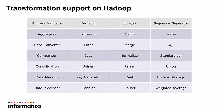Regarding update strategy: Hortonworks Data Platform does support updates, and Informatica supports the update strategy transformation on Hortonworks. However, when designing mappings that use update strategy or sequence generator, you need to understand how the Hadoop platform processes the data. Specifically for update strategy, there are additional configurations required on your Hive table to leverage it. Work with your Hadoop admin to define these configurations, which are also documented in the Informatica help guide.